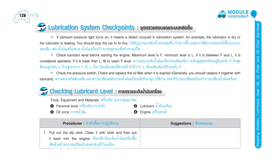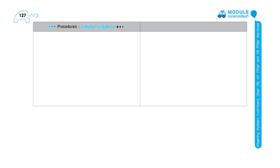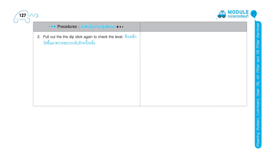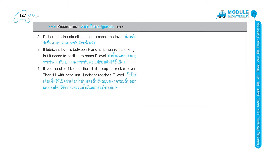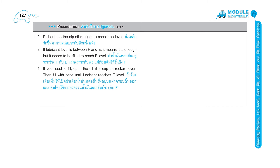Suggestions: 1. You must stop the engine before checking it. Procedures: 2. Pull out the dipstick again to check the level. 3. If lubricant level is between F and L, it means it is enough, but it needs to be filled to reach F level. 4. If you need to fill, open the filler cap on rocker cover, then fill with cone until lubricant reaches F level.